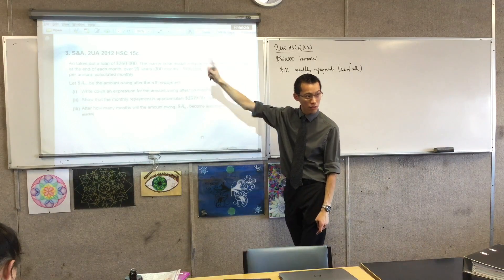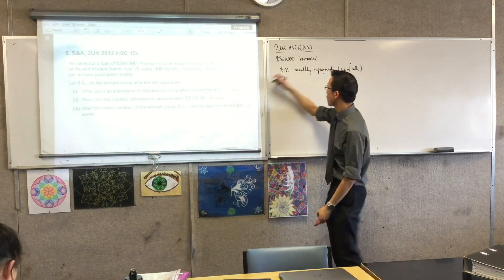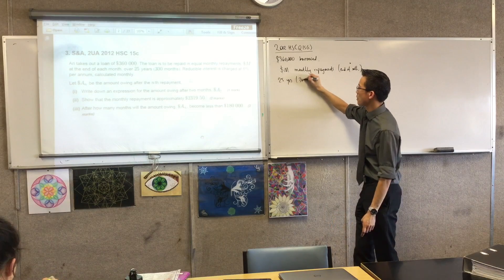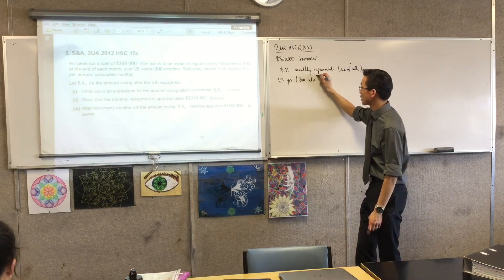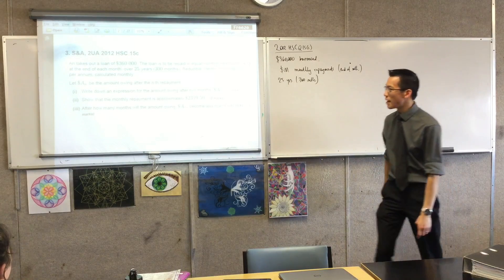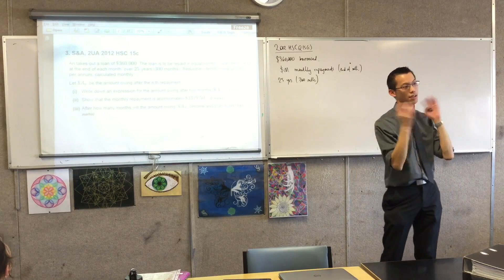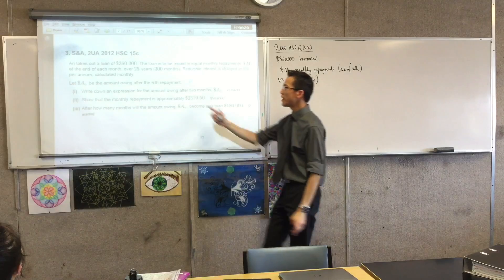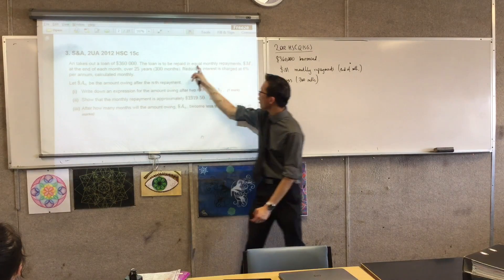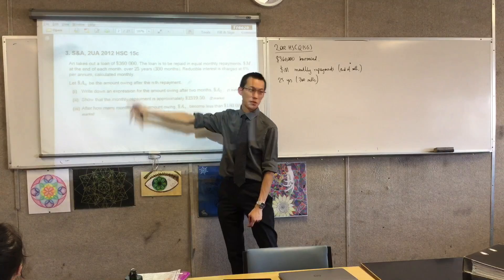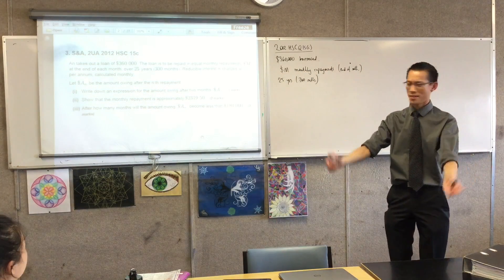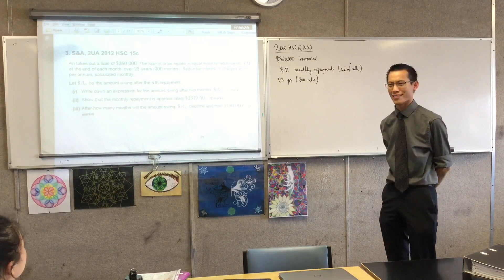The length of the loan is 25 years, which is 300 months. Why do they give us the number of months? To help you remember — it's a classic error students make when they don't convert to months. People say it's a monthly repayment and then just use 25, and end up having to pay off like $30,000 every month and wonder what went wrong.